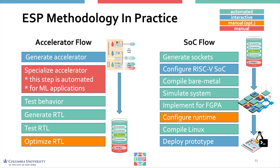In particular, for machine learning inference applications on the edge, ESP integrates the open source HLS4ML package, which allows even the application-specific portion of the accelerator to be automatically generated from Keras, TensorFlow, or PyTorch models. For generic applications, the template generator script creates a fully working skeleton of the accelerator with user-defined registers, largely simplifying the manual effort of designers.